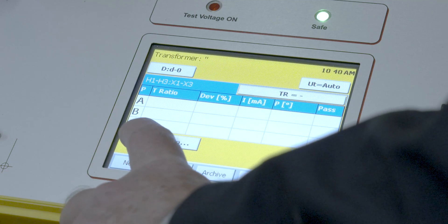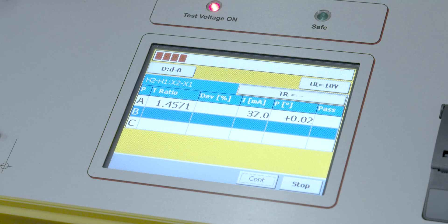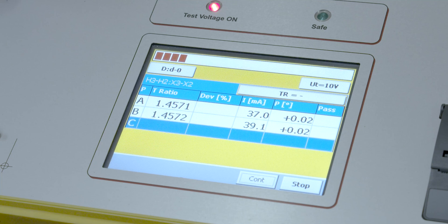Now it's performing those tests. We had calculated some acceptable ratios and everything. The calculated nameplate ratio was 1.4574 if I recall correctly. And so it's listing what each phase has come up with for a ratio. Those look very close.